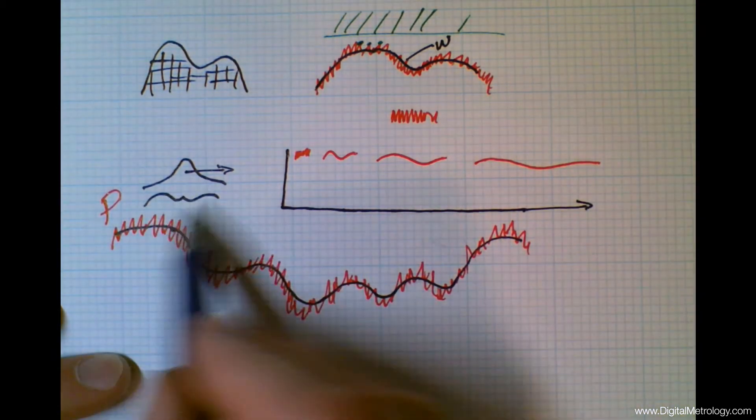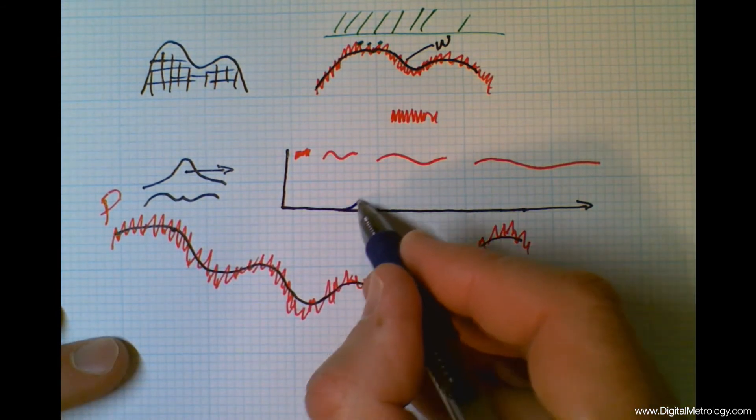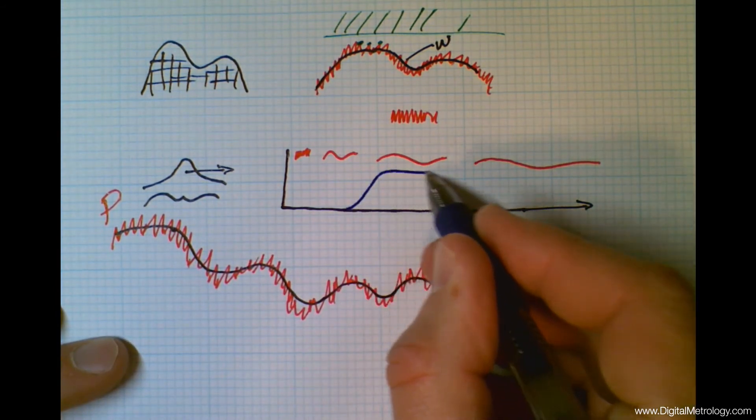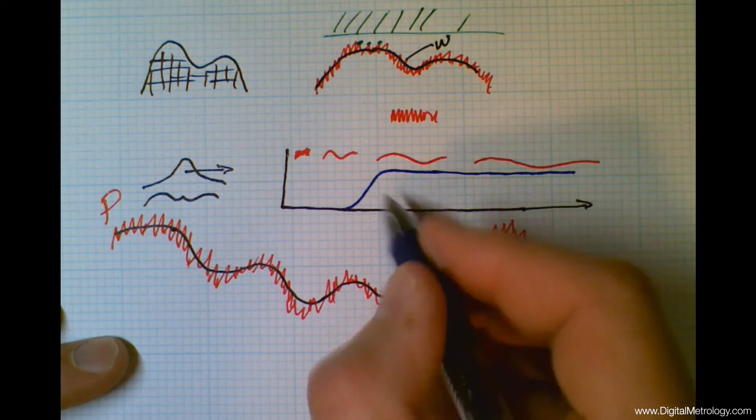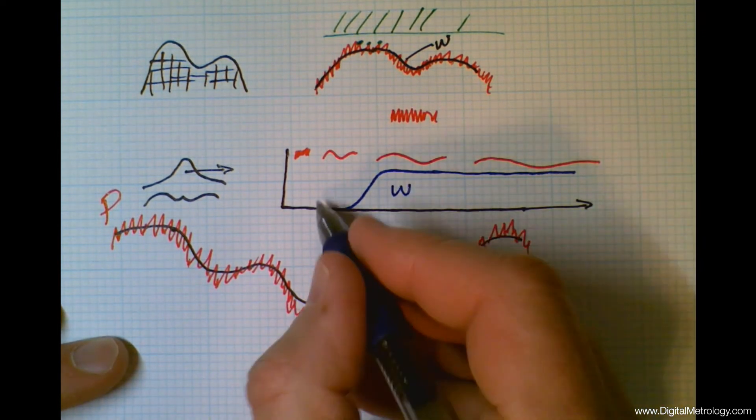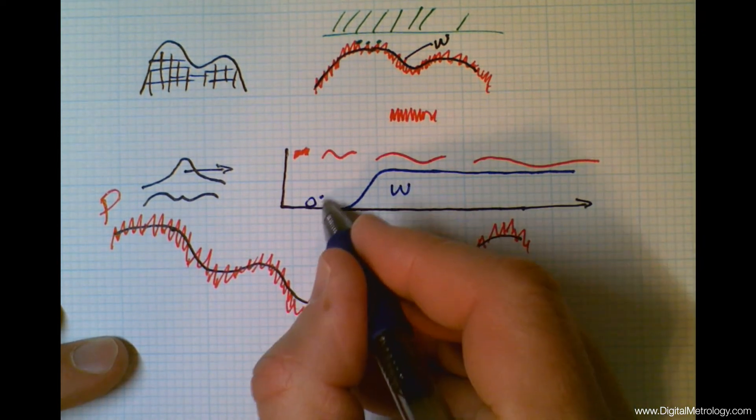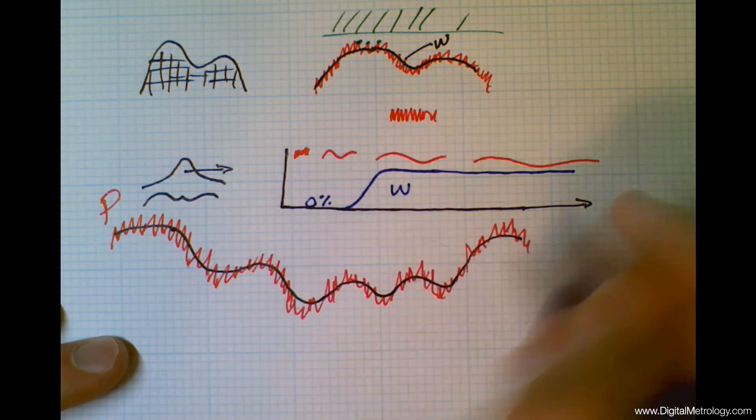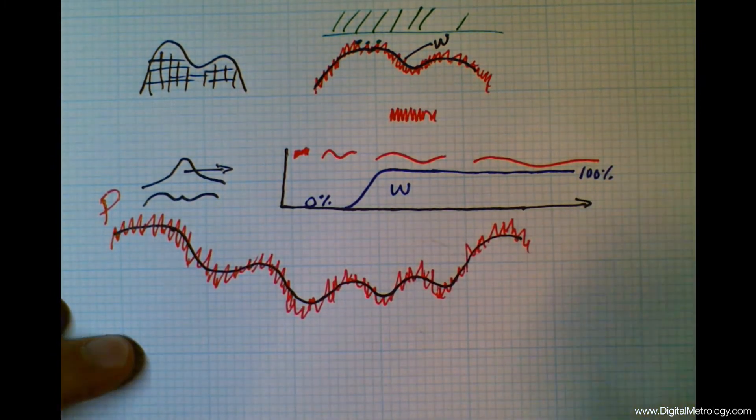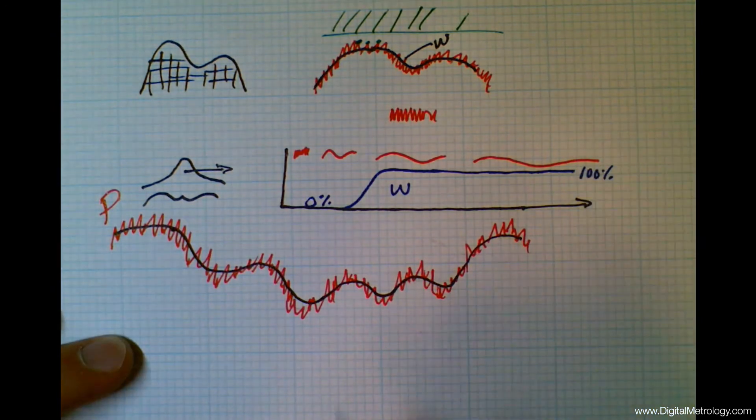And what we've done by choosing this width is we've set up a world where waviness is going to be these long wavelengths. Waviness has zero of the short wavelengths. Zero percent of them get through, but a hundred percent of the long wavelengths make it through. This is a transmission curve.